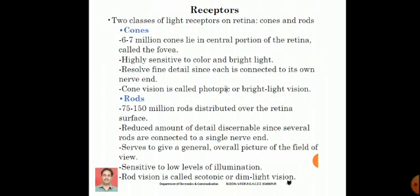Then we have rods. We have about 75 to 150 million rods. These rods are responsible for forming the overall view of the image. It is not possible to obtain finer details by rods because they are connected to a single nerve. They are less sensitive to color and bright light. Rod vision is also called scotopic or dim light vision.